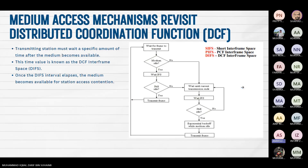The transmitting station must wait a specific amount of time after the medium becomes available. This time value is known as the DCF Inter-Frame Space (DIFS). Once the DIFS interval has elapsed, the medium becomes available for station access contention.